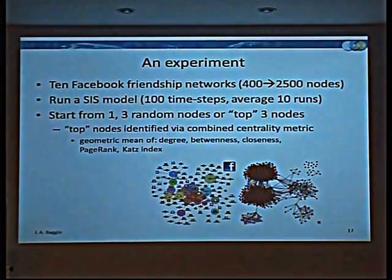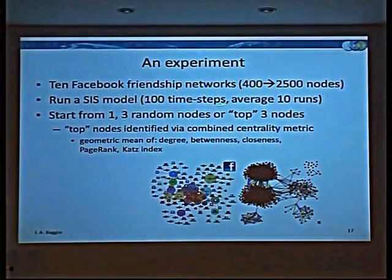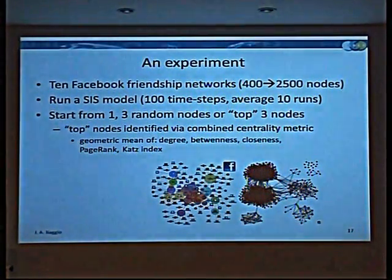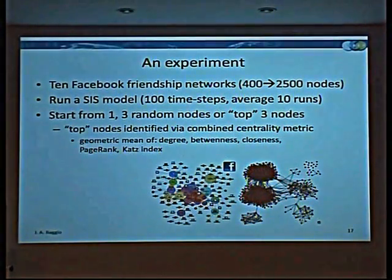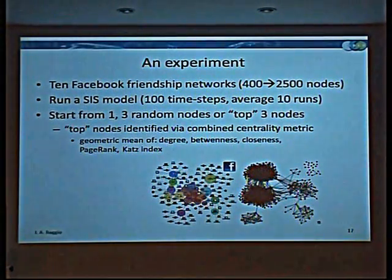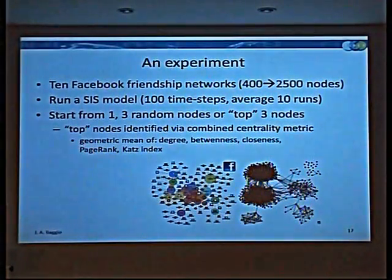For example, we've done a simple experiment: 10 Facebook friendship networks, run an SIS model, run time steps, average 10 runs. Top nodes are identified by a combination of different statistical properties of networks — ways to measure how important a person is within a network.